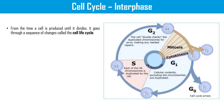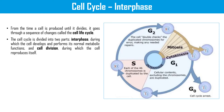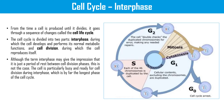From the time a cell is produced until it divides, it goes through a sequence of changes called the cell life cycle. The cell cycle is divided into two parts: interphase, during which the cell develops and performs its normal metabolic functions, and cell division, during which the cell reproduces itself. Although the term interphase may give the impression that it is just a period of rest between cell division phases, this is not the case. The cell is particularly busy and ready for cell division during interphase. This is by far the longest phase of the cell cycle.